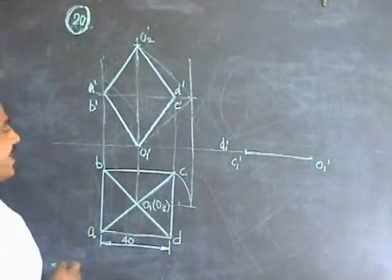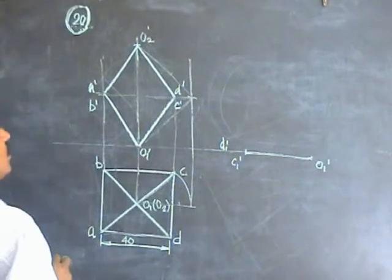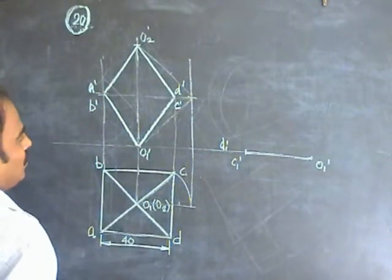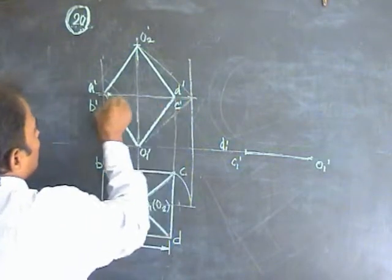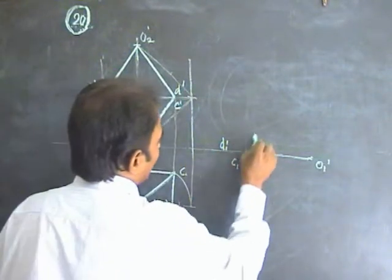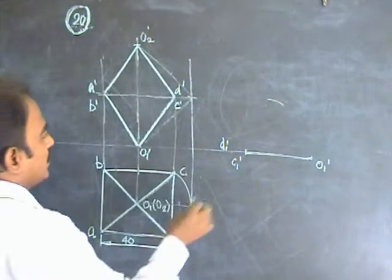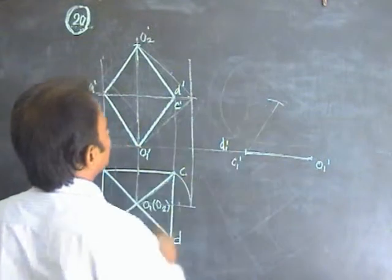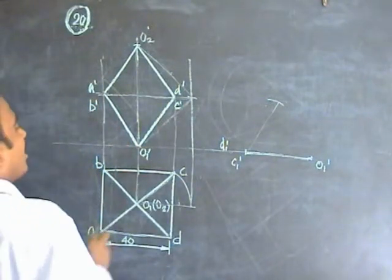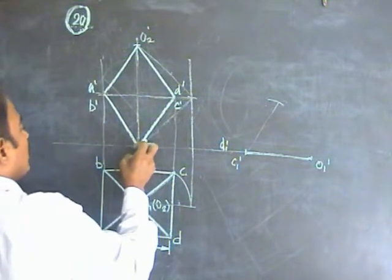Now O1 dash and C1 dash is a line. You have to find out A1 dash and D1 dash. Take this horizontal distance, and from here make an arc with this horizontal distance. In a similar way, you can locate A1 dash and D1 dash through O1 dash also.